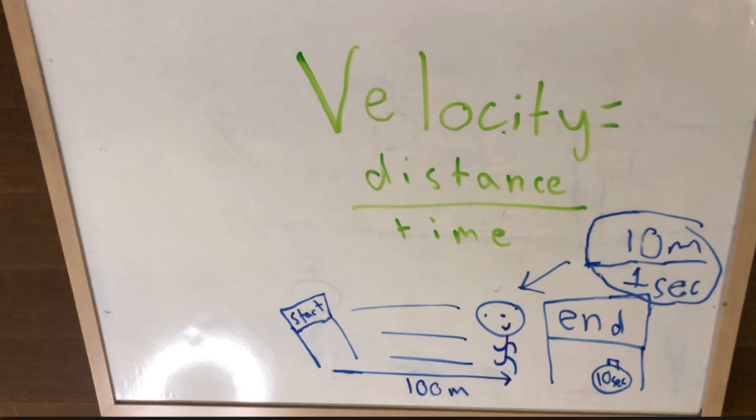With velocity, you always want to have the unit rate of the time it took and the distance you traveled. So instead of 100 meters in 10 seconds, it's 10 meters in 1 second.